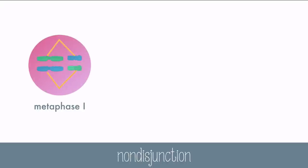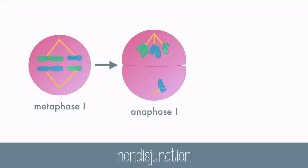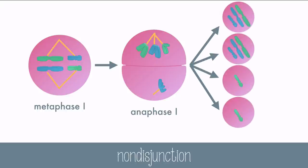During metaphase I, everything is lined up as expected. But during anaphase I, a chromosome is pulled to the wrong side, which leads to gametes with incorrect numbers. Some will have an extra chromosome, and some will have one less.